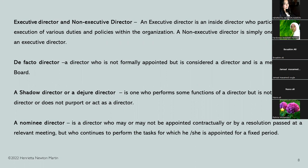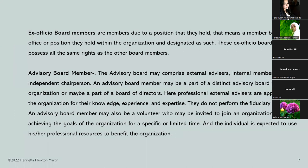Then we have a nominee director — a director who may or may not be appointed contractually or by a resolution passed at the relevant meeting, but who continues to perform the task for which he or she is appointed, normally for a fixed period. Then we have the ex-officio board members. These are members due to a position they hold — members by virtue of their position within the organization — designated as such as ex-officio members.